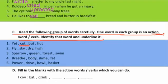Then the next set is: fly, sky, dry, and high. 'Fly' kya hota hai — udna. 'Sky' matlab aakash, 'dry' matlab sukha, aur 'high' matlab ooncha. To kaun sa action word ho gaya? 'Fly' — jaise birds jo hoti hain, vo sky mein fly karti hain, udti hain.